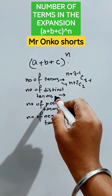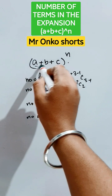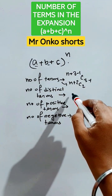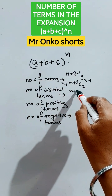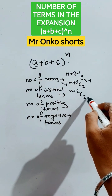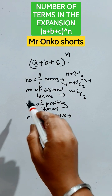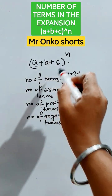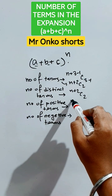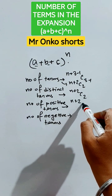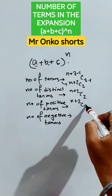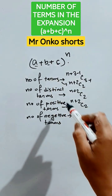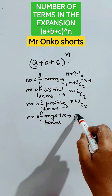Now, number of distinct terms: since all of the terms are distinct, the total number of distinct terms is also ⁿ⁺²C₂. Number of positive terms: all of the terms are positive, so this is also ⁿ⁺²C₂. Number of negative terms: none of the terms are negative, so it is 0.